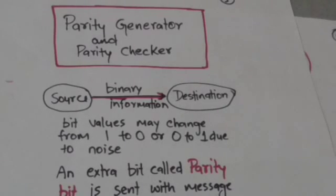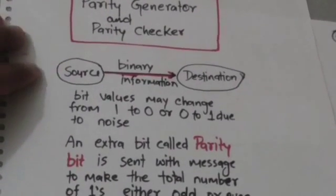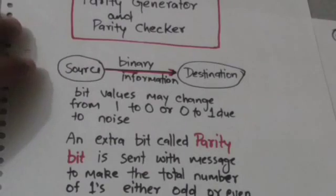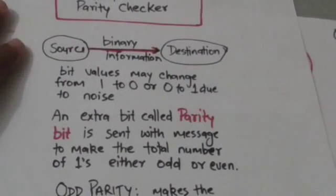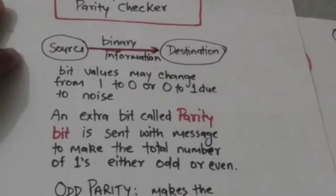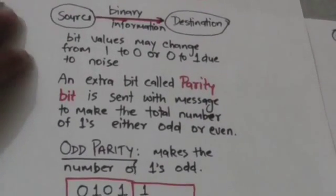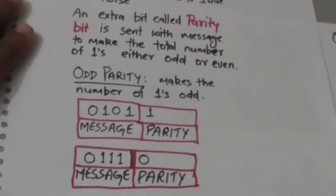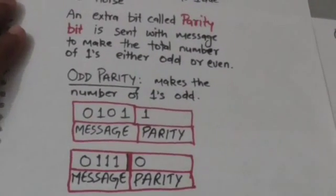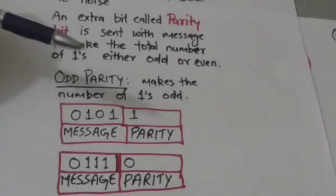To detect such types of errors, an extra bit called a parity bit is sent with the message to make the total number of ones either odd or even. In odd parity, the parity bit makes the number of ones odd.